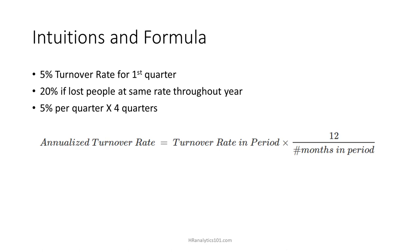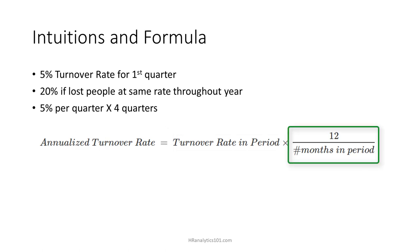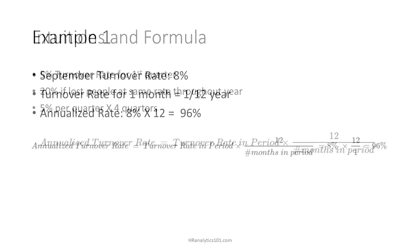Here you can see the formula for annualized turnover rate. In words, you first calculate the turnover rate for the given period of interest, just as you saw in our previous videos or in the posts on our site. Then, multiply that rate by the inverse of the proportion of the year accounted for by the period over which you calculated that turnover rate.